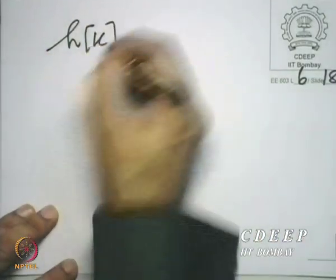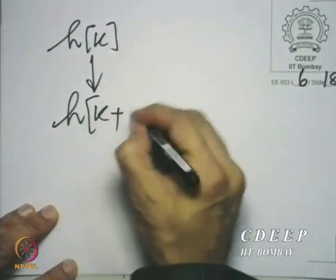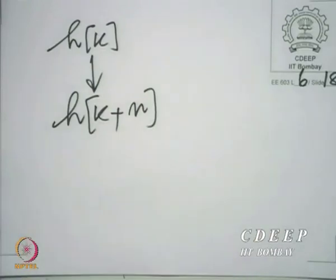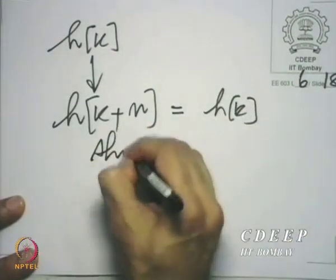Towards interpreting that, we will follow two steps. We will first go from h[k] to h[k+n] for a fixed n. For a fixed n, h[k+n] is essentially the sequence h[k] shifted backward by n.